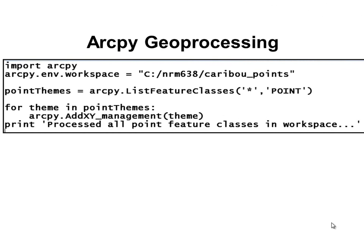The next week, we'll be working with ArcPy geoprocessing, and it can be very simple. Here's an example where we set our workspace, get all the point feature classes inside it, and then for every point feature class in that list, run the geoprocessing tool addxy. Basically, we process all the point feature classes in the workspace and now they have their x, y coordinates in the point attribute table.